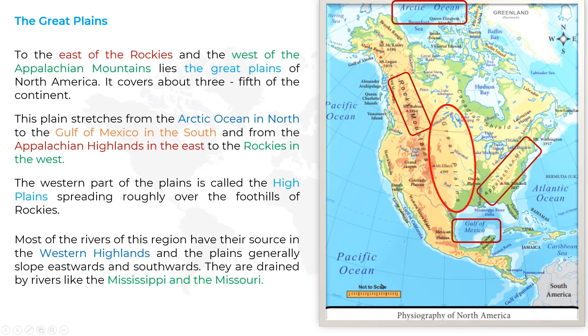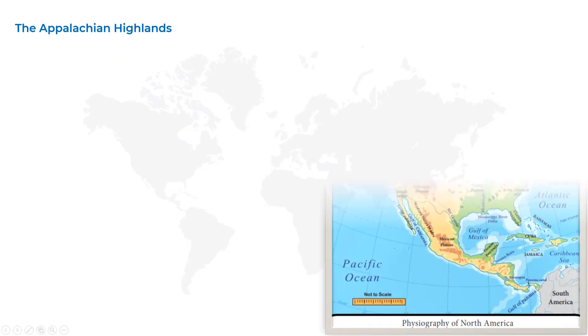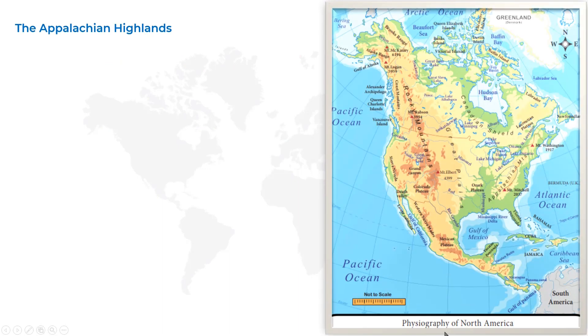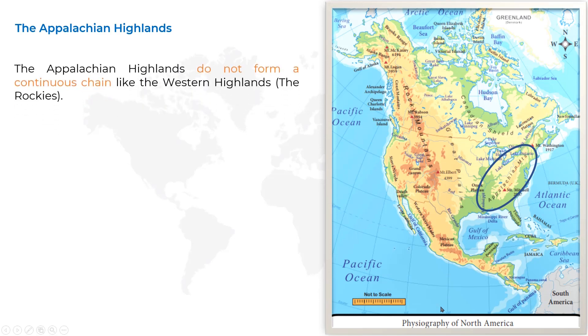Next, we are going to learn about the Appalachian Highlands. The Appalachian Highlands do not form a continuous chain like the western highlands, the Rockies.